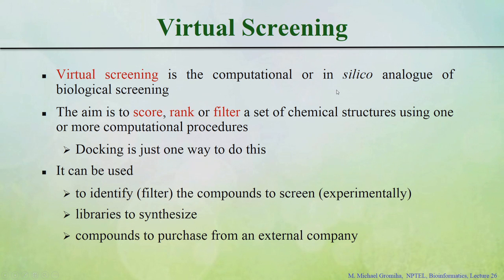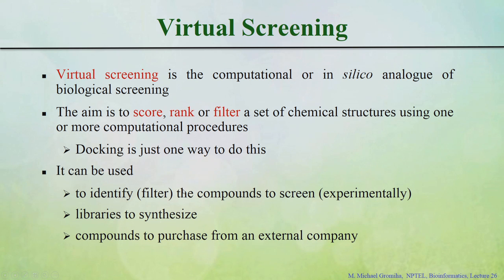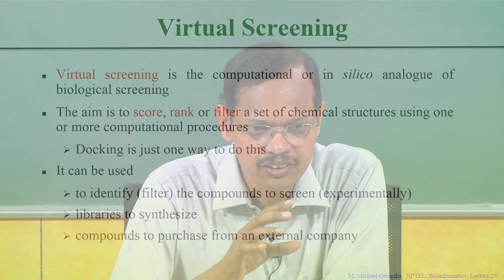Virtual screening is a computational or in silico algorithm for screening compounds. The aim of virtual screening is to take proteins and ligands, provide a score, rank the ligands, and filter structures to determine whether they fit a particular conformation in the protein site. You can use docking to filter compounds, generate libraries to synthesize, and suggest compounds to purchase for experiments. However, final experimental validation is always required, even when lead compounds are identified by virtual screening.